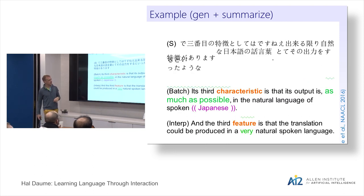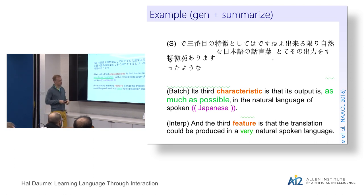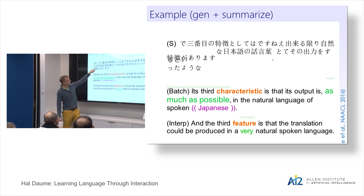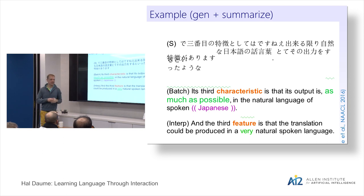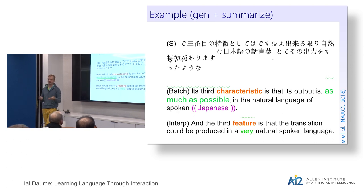Here are a couple of examples. In one, the batch translation produces 'honorific' while the interpreter says 'polite' — a hypernym — and also segments into two sentences and replaces 'adequately' with 'enough.' In another, the batch translator says 'its third characteristic is that its output is as much as possible in the natural language of spoken Japanese,' while the interpreter says 'in the third feature, the translation could be produced in very natural spoken language' — and doesn't even say 'Japanese' at all, even though it appears on the Japanese side.